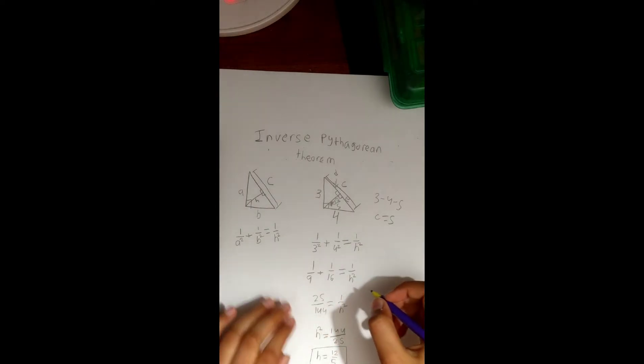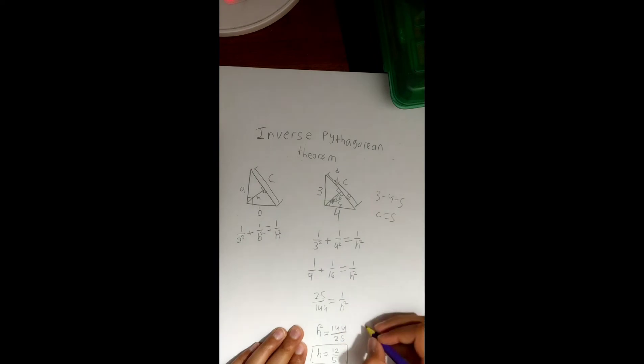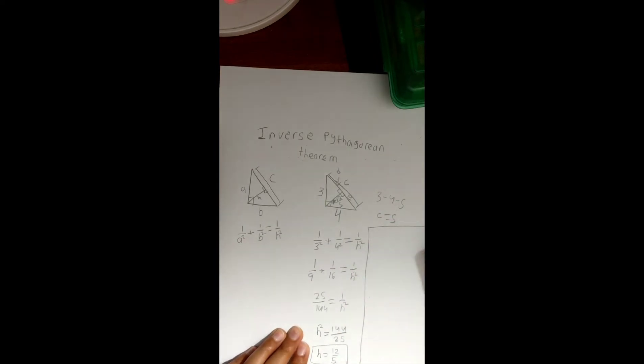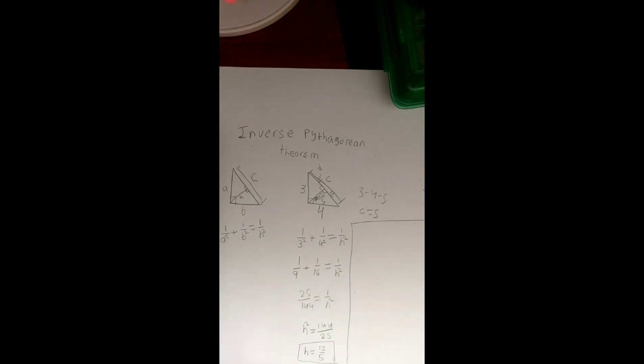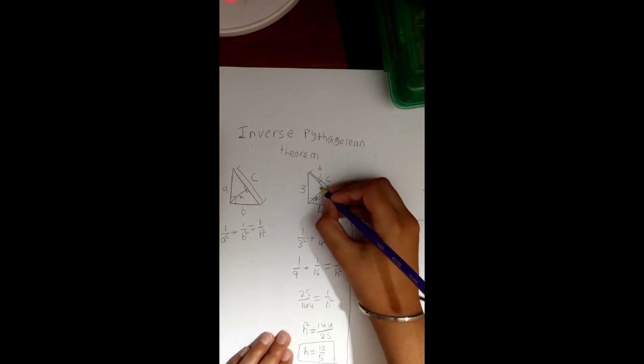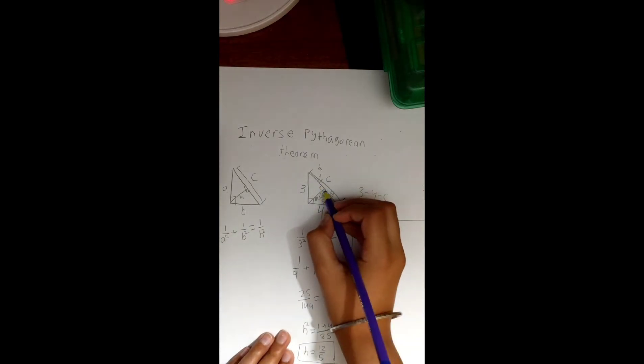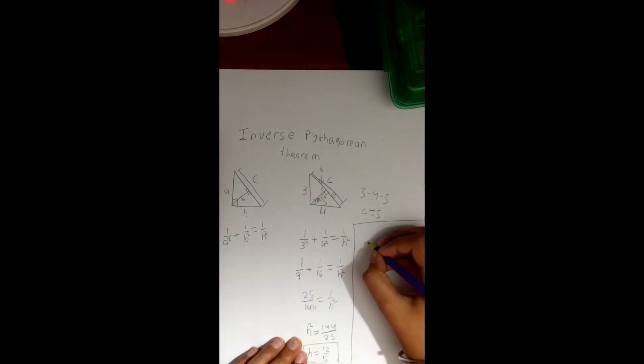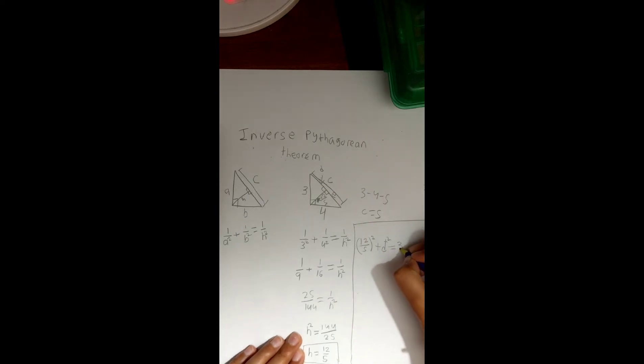So let's do it. Let's start with... let me make some space here. So we know that anything across the right angle is the hypotenuse. So if we follow the right angle, we know that the 3 is the hypotenuse, which means we can set the equation up as 12 over 5 squared plus d squared equals 3 squared.